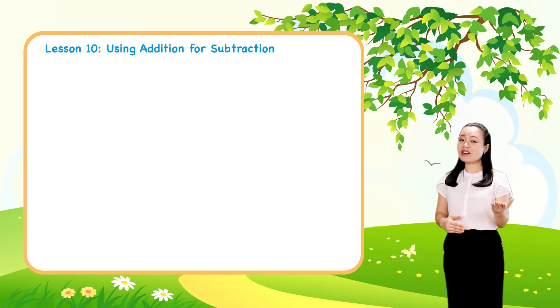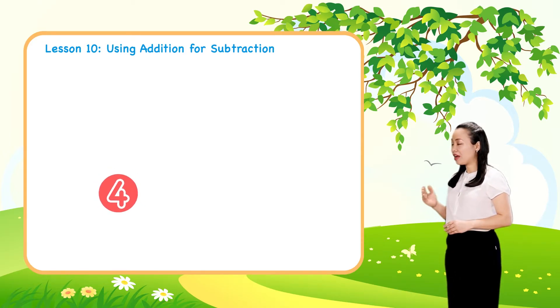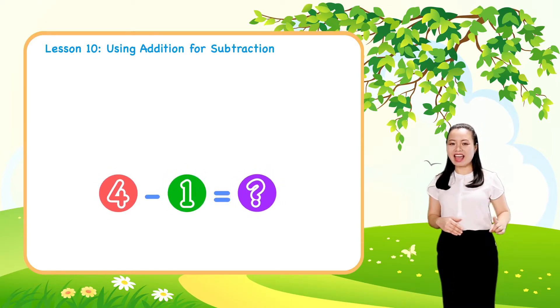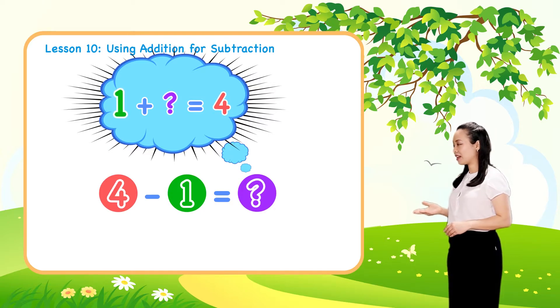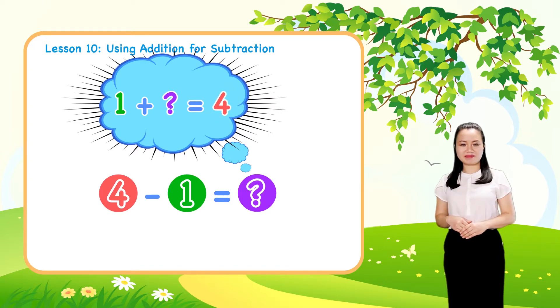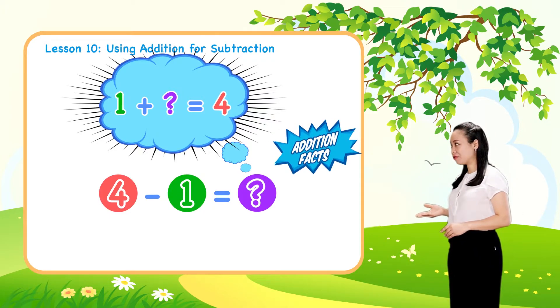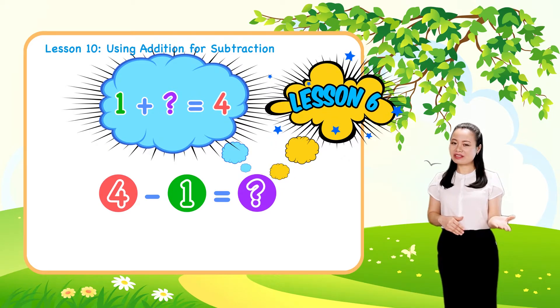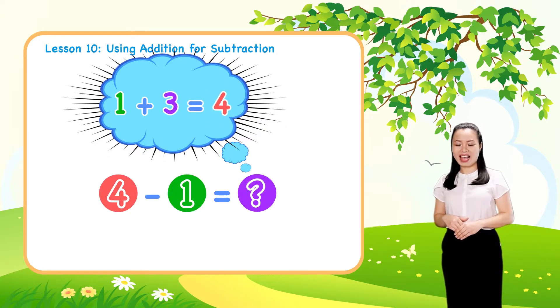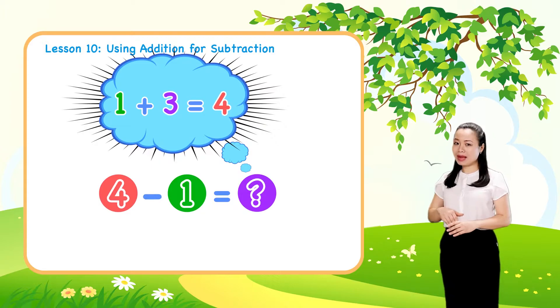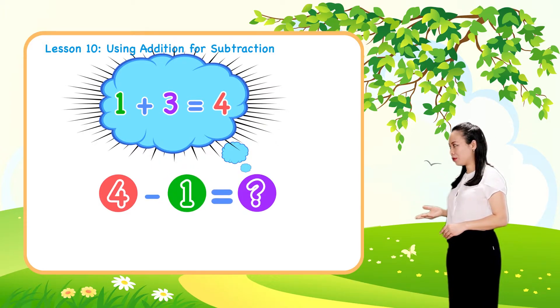Overall, when you are asked to find 4 minus 1, then you can think the related addition: 1 plus what equals 4. If you memorize the addition facts we learned in lesson 6, you can quickly find 1 plus 3 equals 4. Therefore, 4 minus 1 equals 3.